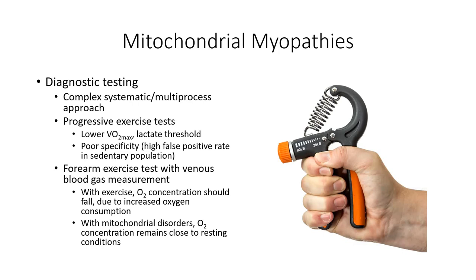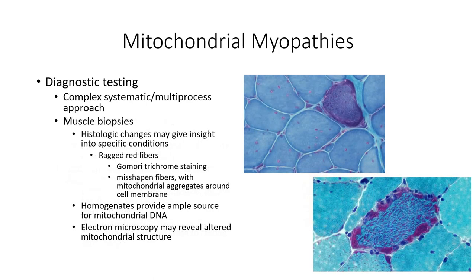A progressive exercise test might also be ordered in the early phases of diagnosis, but has very low specificity as sedentary individuals typically also have low values of oxygen consumption. The next step is typically a histological analysis of a muscle biopsy. The most characteristic finding is the presence of a so-called ragged red fiber with Gomori trichrome staining, which is the result of mitochondrial aggregates just deep to the sarcolemma. Special analysis of the tissue with electron microscopy may help to identify misshapen mitochondria. These aggregates provide a rich source of mitochondrial DNA that can be analyzed for genetic mutations known to cause mitochondrial myopathies.